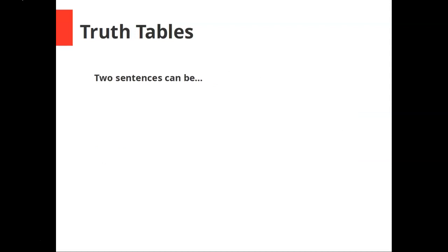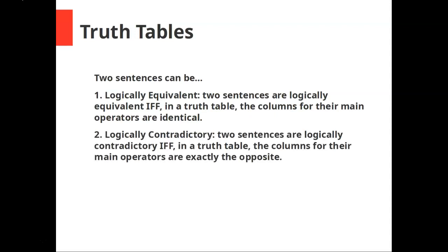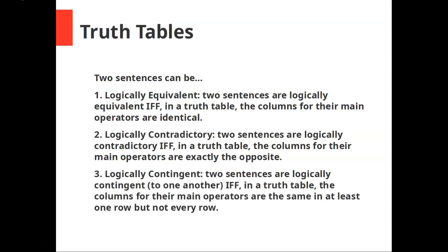Two sentences can be logically equivalent — two sentences are logically equivalent if and only if in a truth table the columns for their main operators are identical. Two sentences can be logically contradictory if and only if in a truth table the columns for their main operators are exactly the opposite. And two sentences can be logically contingent to one another if and only if in a truth table the columns for their main operators are the same in at least one row, but not every row.